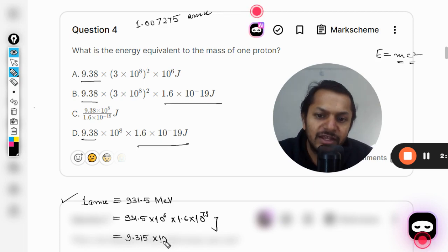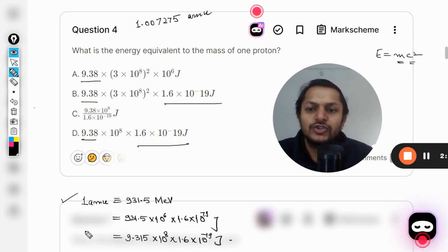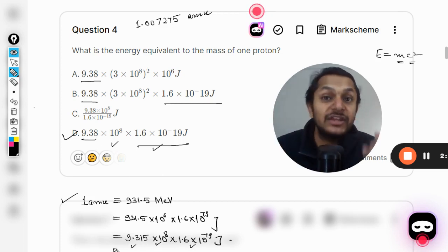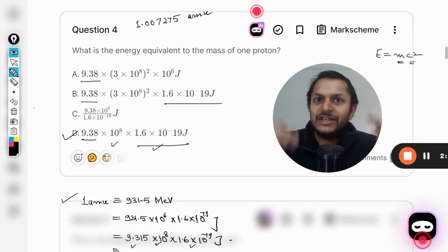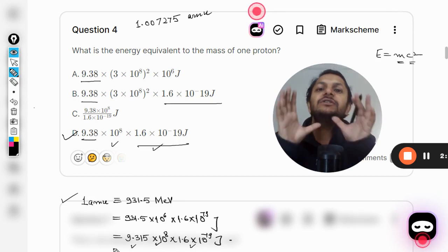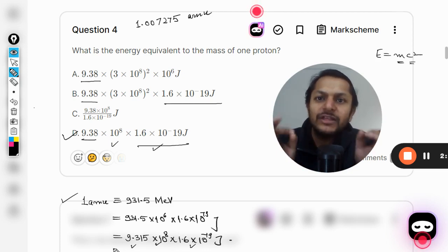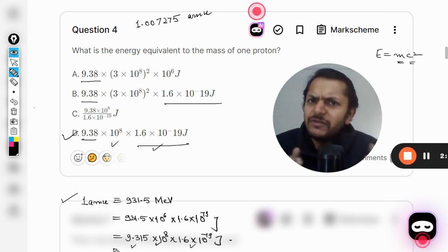Into 10 raised to power 8 into 1.6 into 10 to the negative 19 joules. This is one amu. So our answer should be D from that point of view. You see, 10 raised to power 8 is here and the charge elementary charge is also written here. The value is slightly more than 9.31, it becomes 9.38. Why? Because the mass of proton is actually slightly more than one amu, so it will be more than 9.31, isn't it?